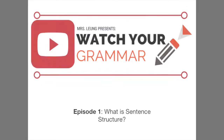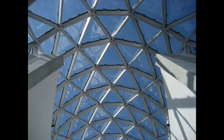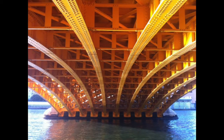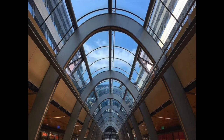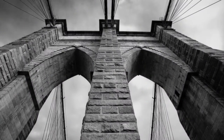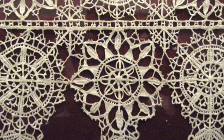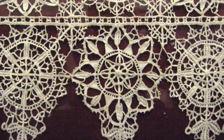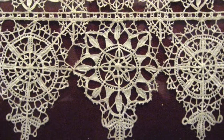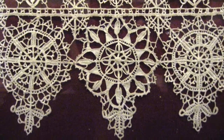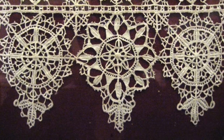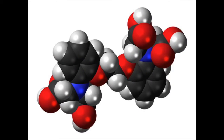Watch Your Grammar, Episode 1: Sentence Structure. What does structure mean? Structure is the underlying source of strength in buildings or bridges. Structure appears in repetition to create unity through patterns. Structure can even be a guide for creation, like this model of a molecule.